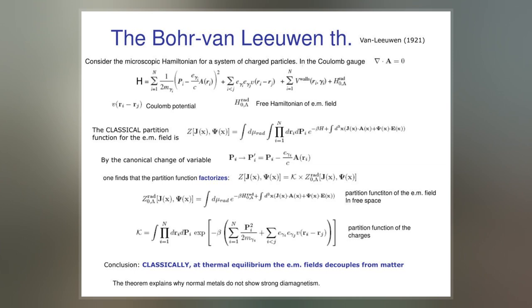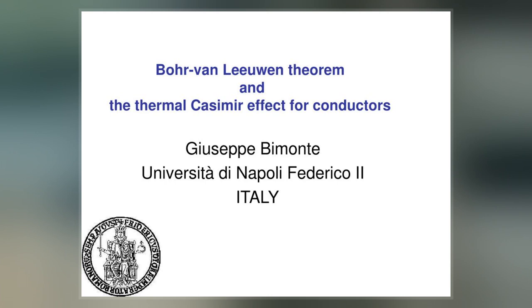The Bohr-Van Leeuwen theorem states that when statistical mechanics and classical mechanics are applied consistently, the thermal average of the magnetization is always zero. This makes magnetism in solids solely a quantum mechanical effect and means that classical physics cannot account for diamagnetism.